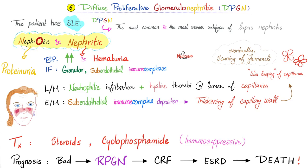Let's review diffuse proliferative. The patient has lupus. Diffuse proliferative is the most common and most severe subtype of lupus nephritis. You have nephrotic and nephritic features: high proteinuria, low protein in blood, edema, hyperlipidemia, hypertension, and hematuria. You see granular subendothelial immune complexes. It's called proliferative because of neutrophil proliferation — the kidney is inflamed, injured, and bleeding. You also see hyaline thrombi in capillary lumens. The subendothelial complexes thicken the capillary wall, giving the classic wire looping of the capillaries.